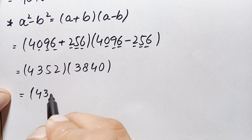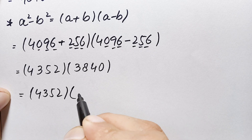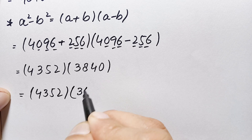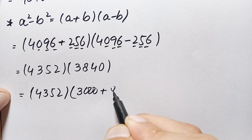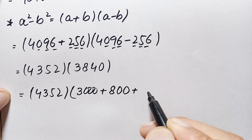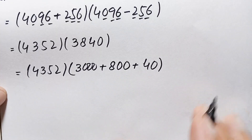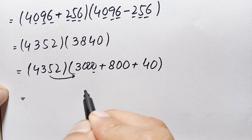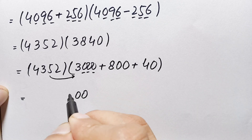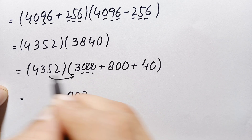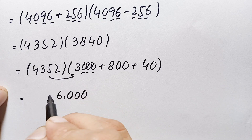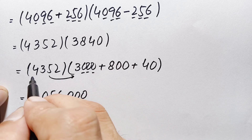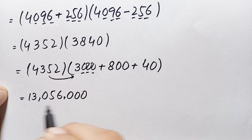For the multiplication, we keep 4352 and express 3840 as the sum of place values of its non-zero digits: 3000 + 800 + 40. Multiplying 4352 × 3000: 4352×0=0, 4352×0=0, 4352×0=0; 3×2=6, 3×5=15 carry 1, 3×3=9+1=10 carry 1, 3×4=12+1=13. This gives 13,056,000.